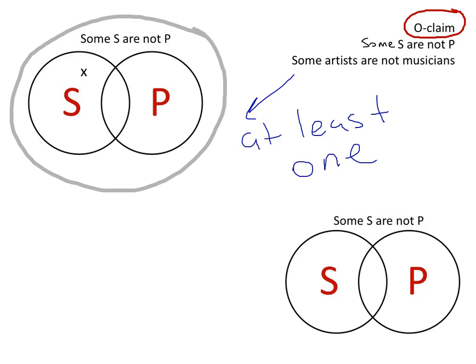And so this is going to be the region that we're referring to. Why? Because this is the region that is S and not P. So if we are saying at least one member of the S class is not in the P class, the some is represented by the X. And it has to go in that region. That's how we get this.